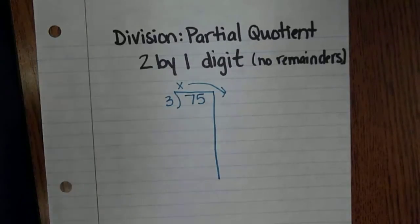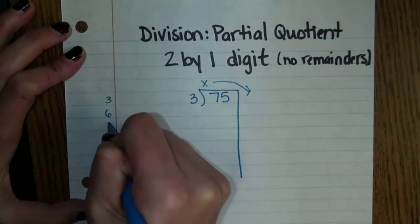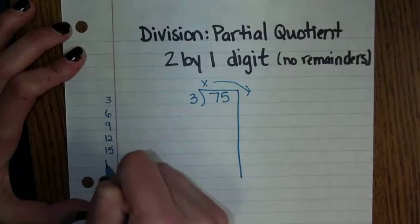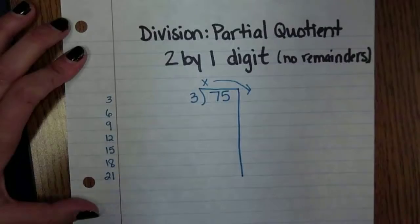We want students to work with facts that they know. It might be helpful for them to start with counting by the divisor on the outside and making a multiple tower of 3, 6, 9, 12, 15, 18, 21. They can also go higher and just think about it mentally.